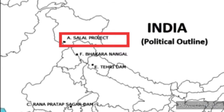The first dam is Salal Dam. Salal Dam is also known as Salal Hydraulic Power Station. It is situated on the Chenab river in the Reasi district of Jammu and Kashmir.